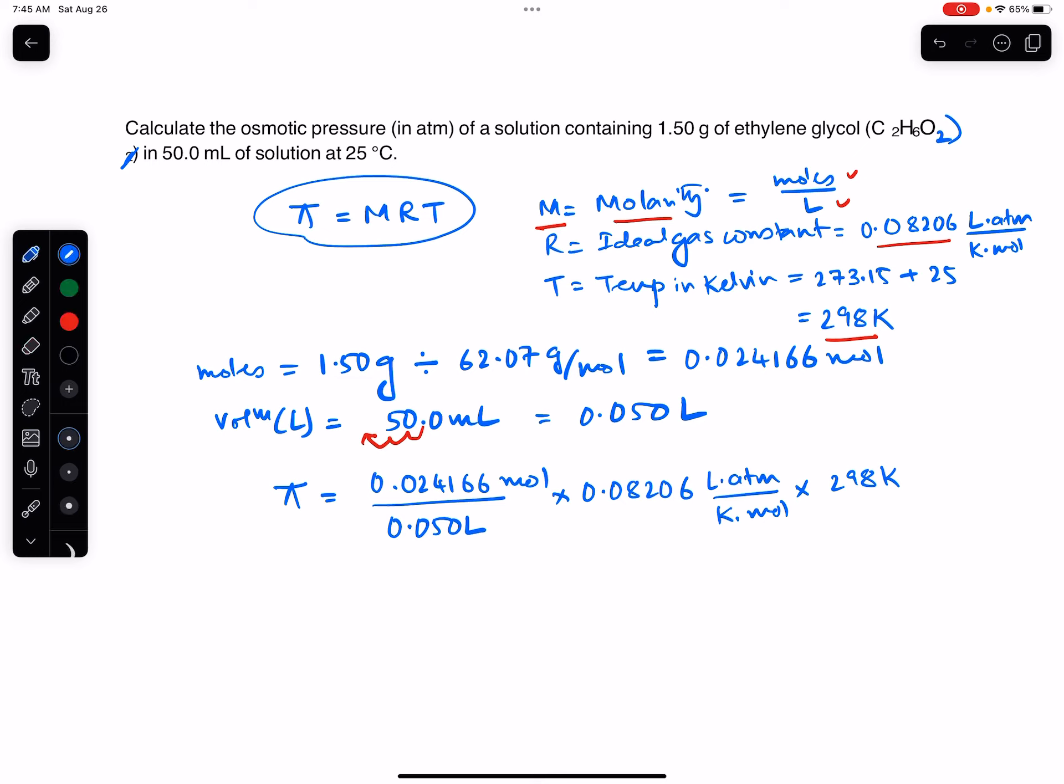And if you cancel out all the units and do the math in your calculator, you will get 11.819 atmosphere, which you can round to 11.8 atmosphere. And that is the osmotic pressure in atmosphere of the solution containing this much ethylene glycol.